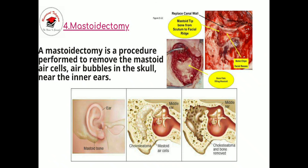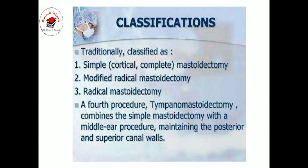Next is mastoidectomy. As you can see in the picture, a mastoidectomy is a procedure performed to remove the mastoid air cells — air bubbles in the skull near the inner ear. Mastoidectomy is traditionally classified as: simple mastoidectomy, modified radical mastoidectomy, radical mastoidectomy, and a fourth procedure, tympanomastoidectomy, which combines simple mastoidectomy with a middle ear procedure maintaining the posterior and superior canal walls.